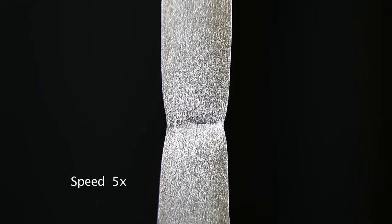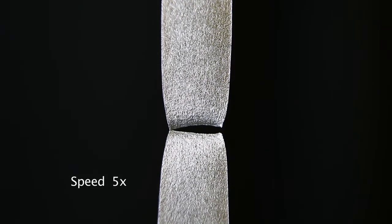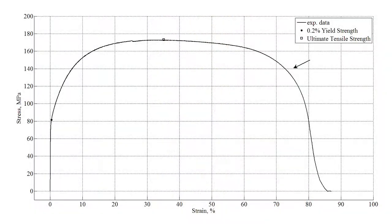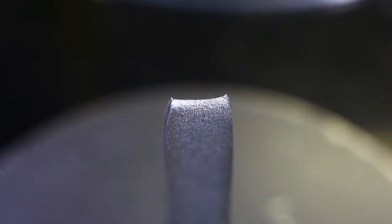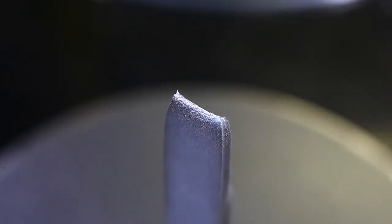The well-known necking phenomenon initiates at the maximum or ultimate stress. After that the section reduces and so does the load. Such a ductile metal can show an almost vanishing final section without a definite fracture.